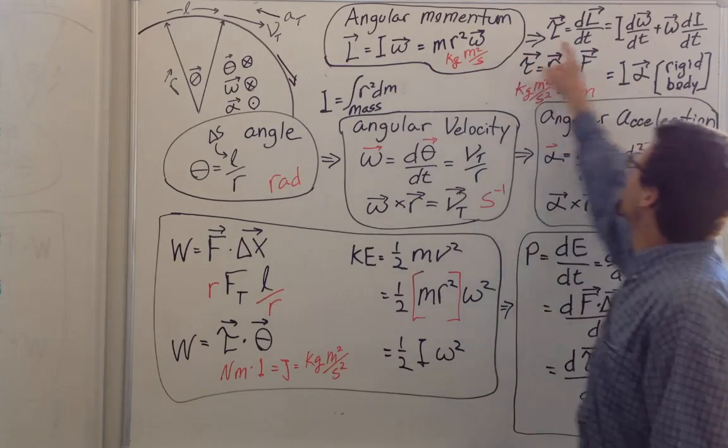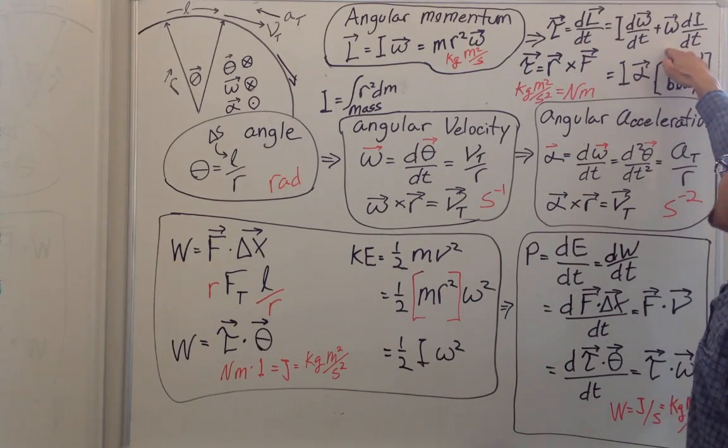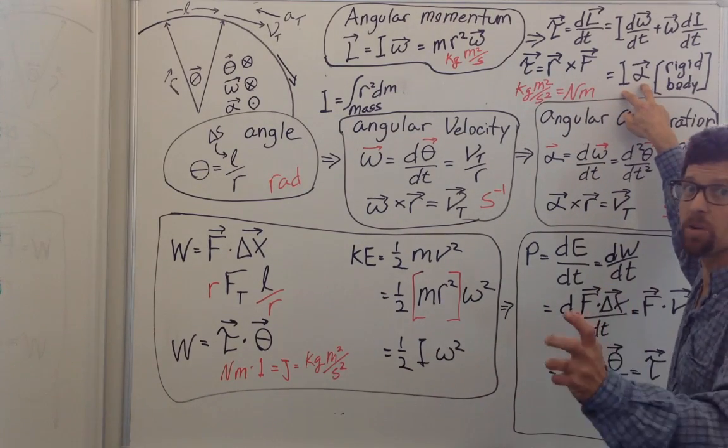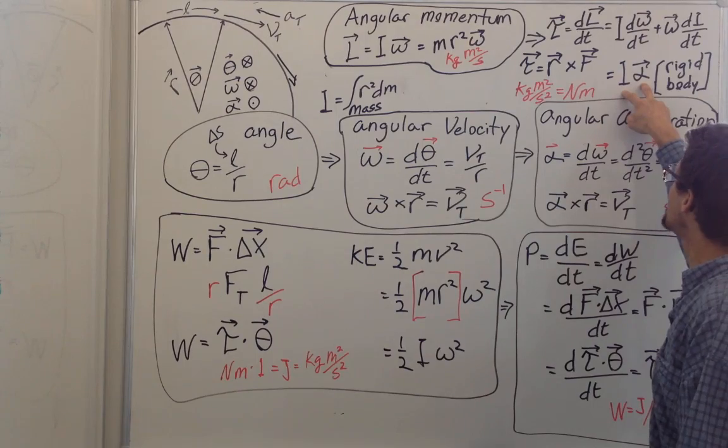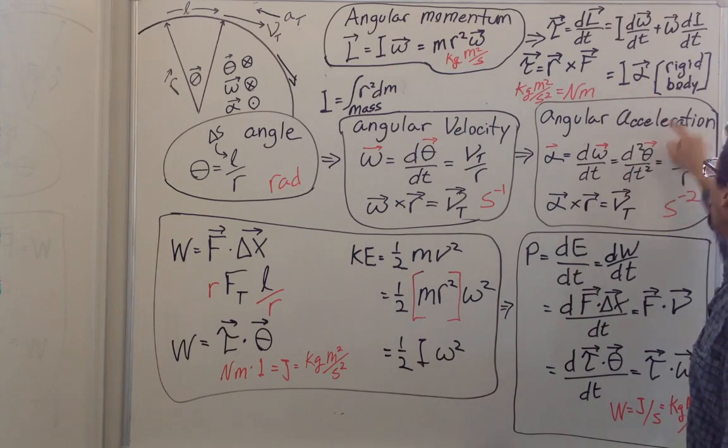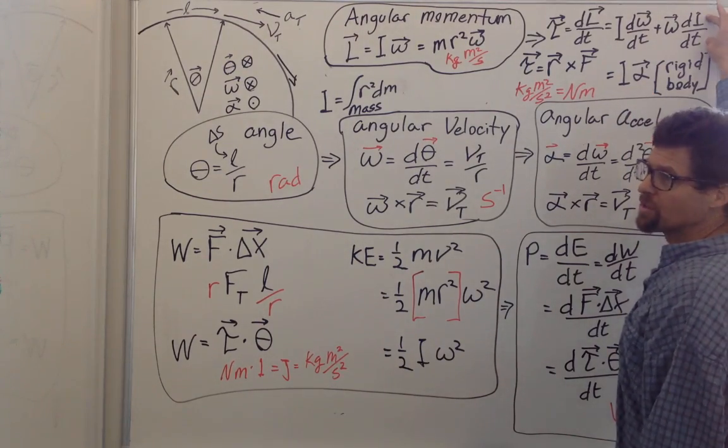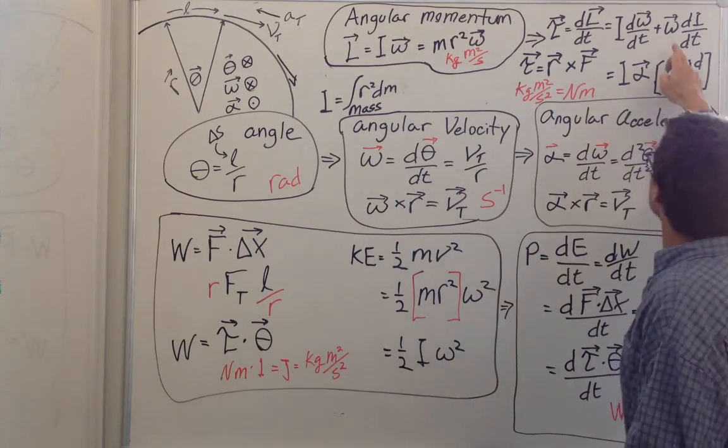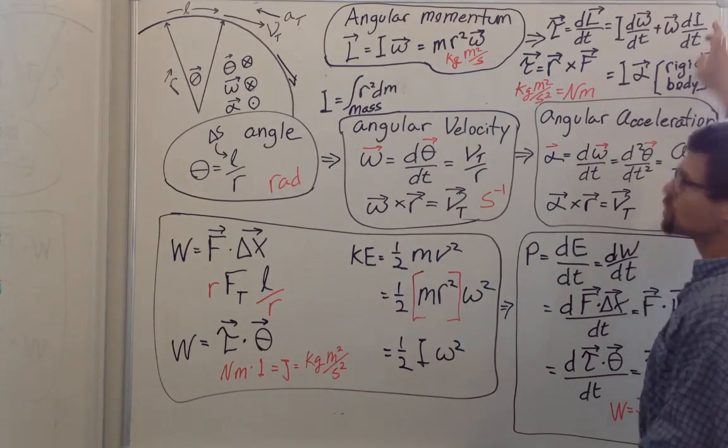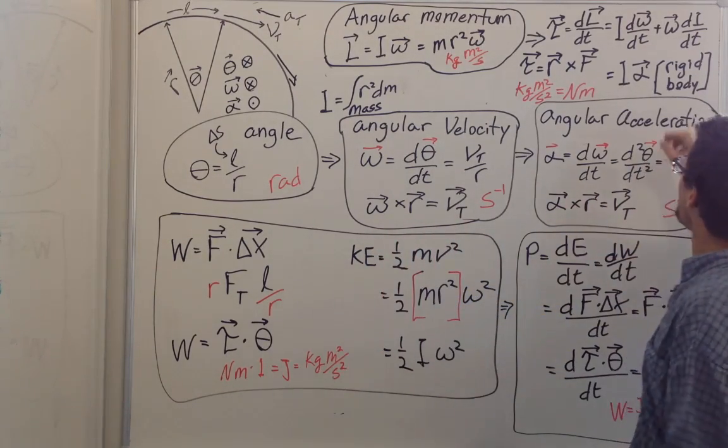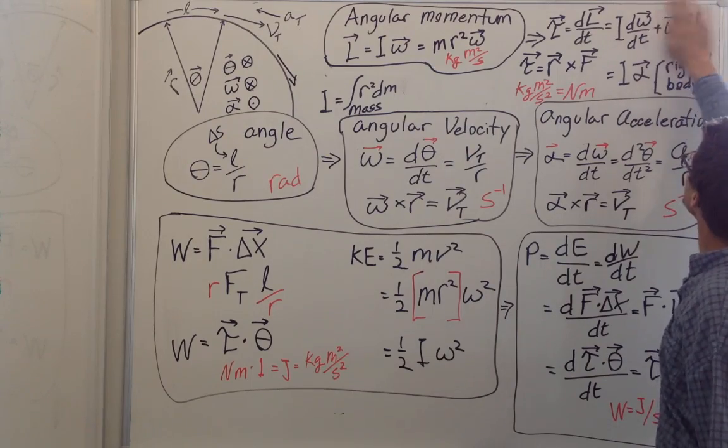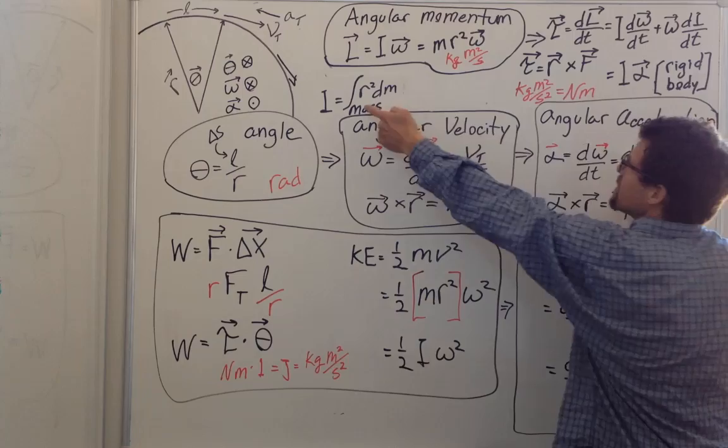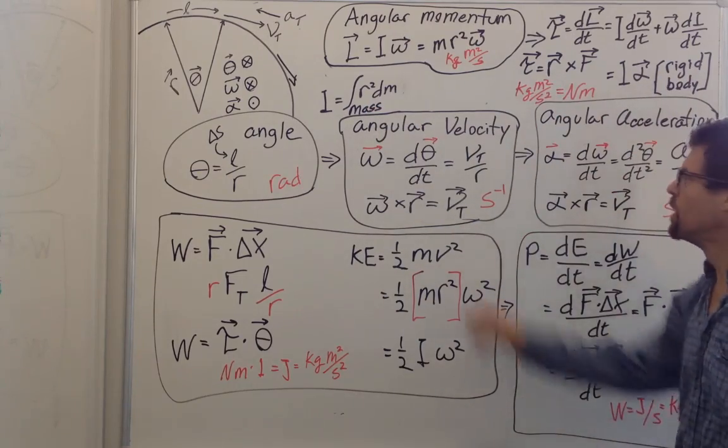We substitute in and use the chain rule to get these two terms. We can see that torque equals I times alpha, just like force equals mass times acceleration, but only for a rigid body where the moment of inertia doesn't change. When a skater pulls in her arms and speeds up, that's this term right here. For a rigid body that doesn't change its shape or mass distribution, you can neglect this and you have I times alpha, which is just this times that mass term, the moment of inertia.